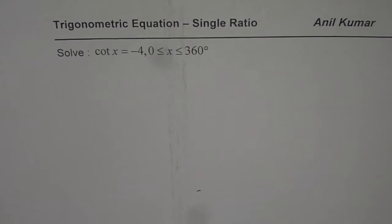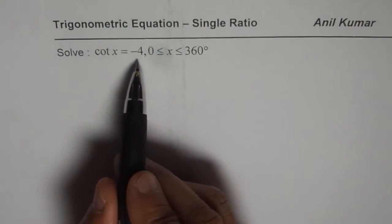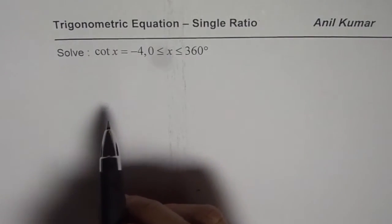I am Anil Kumar and in this video we will now consider reciprocal trigonometric ratio. Question here is, cotangent x equals to minus 4 where x is between 0 to 360 degrees.